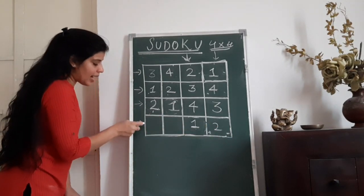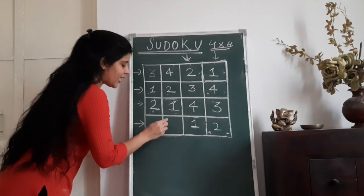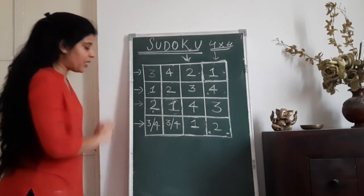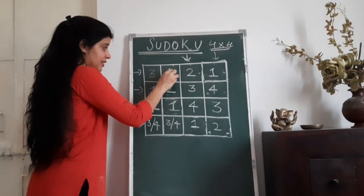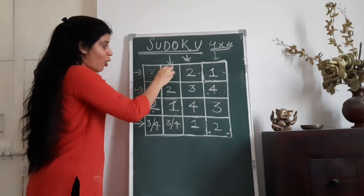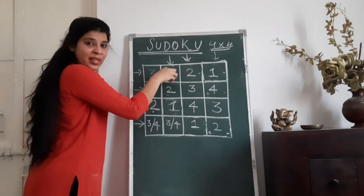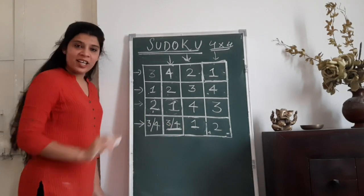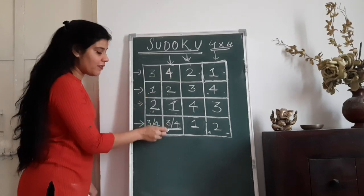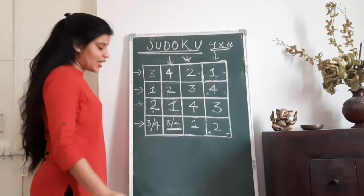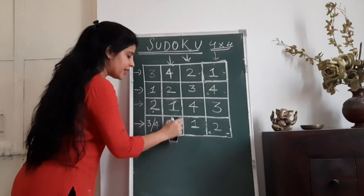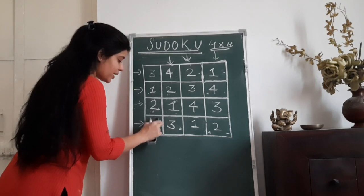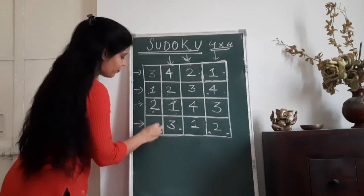Now talking about the last row — 1 and 2 are already there, so what has to come in the remaining cells? Either 3 will come here or 4 will come here. But the second column already has 4 in it, so 4 cannot come here, otherwise 4 is going to repeat itself in this column. Therefore, the number which will come here is going to be 3, and the number which will come in the other cell is going to be 4.